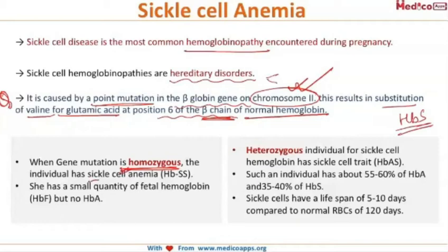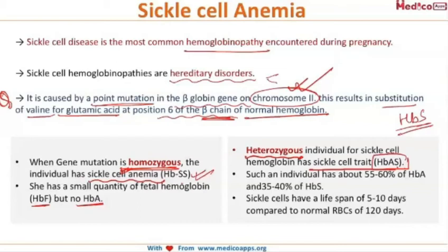When this gene mutation is homozygous, the individual has sickle cell anemia — they have a very small quantity of HbF and no HbA; what is present is HbSS. In heterozygous individuals for sickle cell hemoglobin, they have sickle cell trait (HbAS). Such individuals have about 55 to 60 percent HbA and 35 to 40 percent HbS.